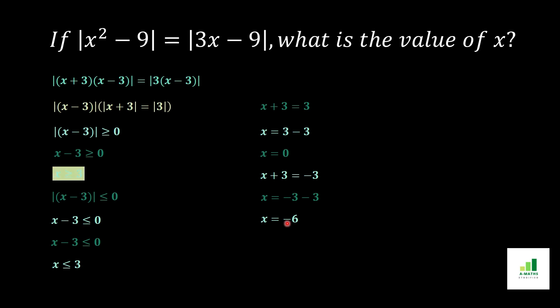So there are four values for x: first, x ≥ 3; second, x ≤ 3; third, x = 0; and fourth, x = -6. I hope this video is very useful to all of you. If you like this video, please hit the like button and subscribe to our channel. Thank you.